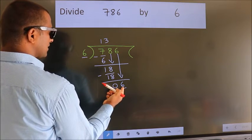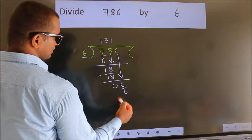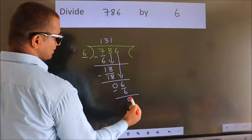When do we get 6? In 6 table, 6 ones, 6. Now we subtract. We get 0.